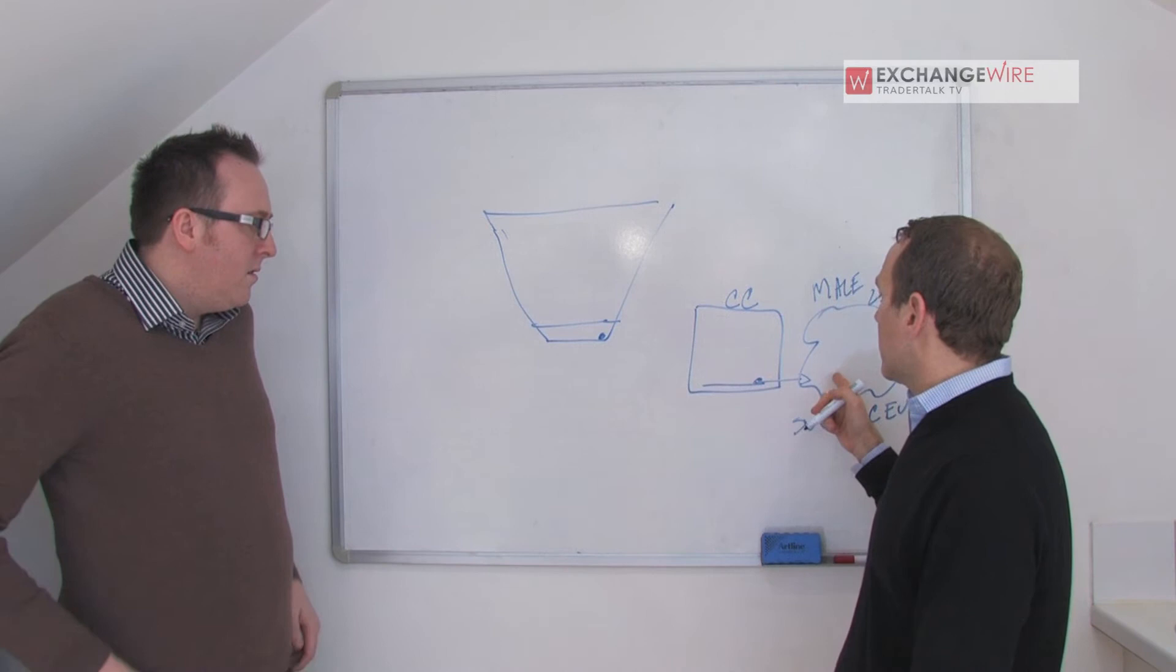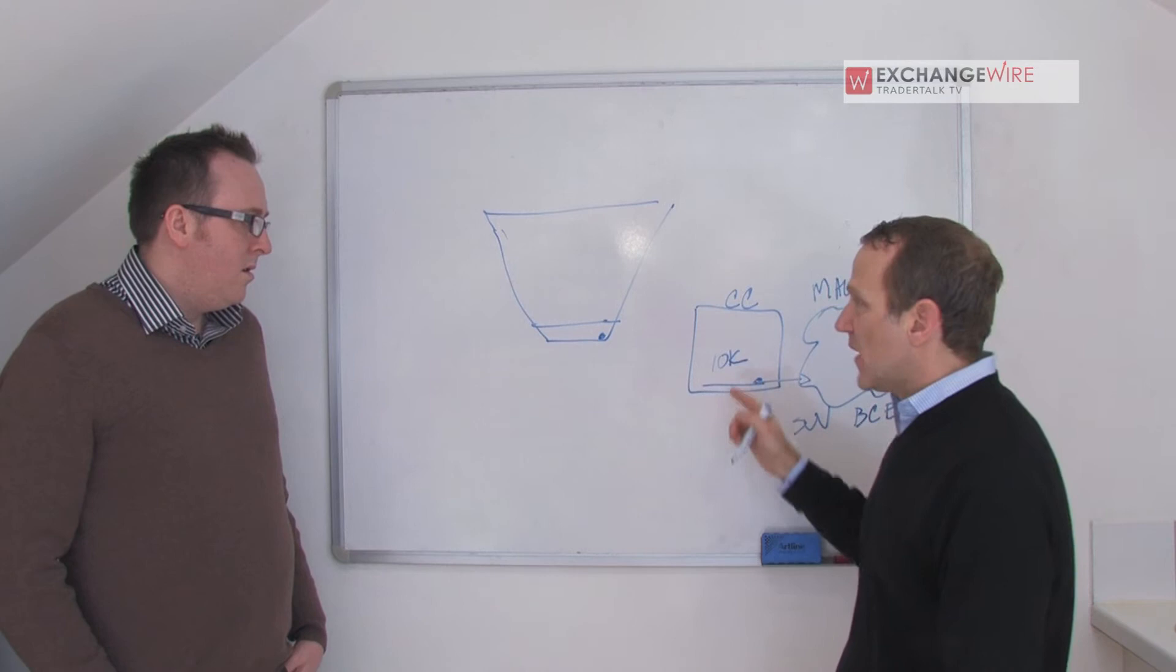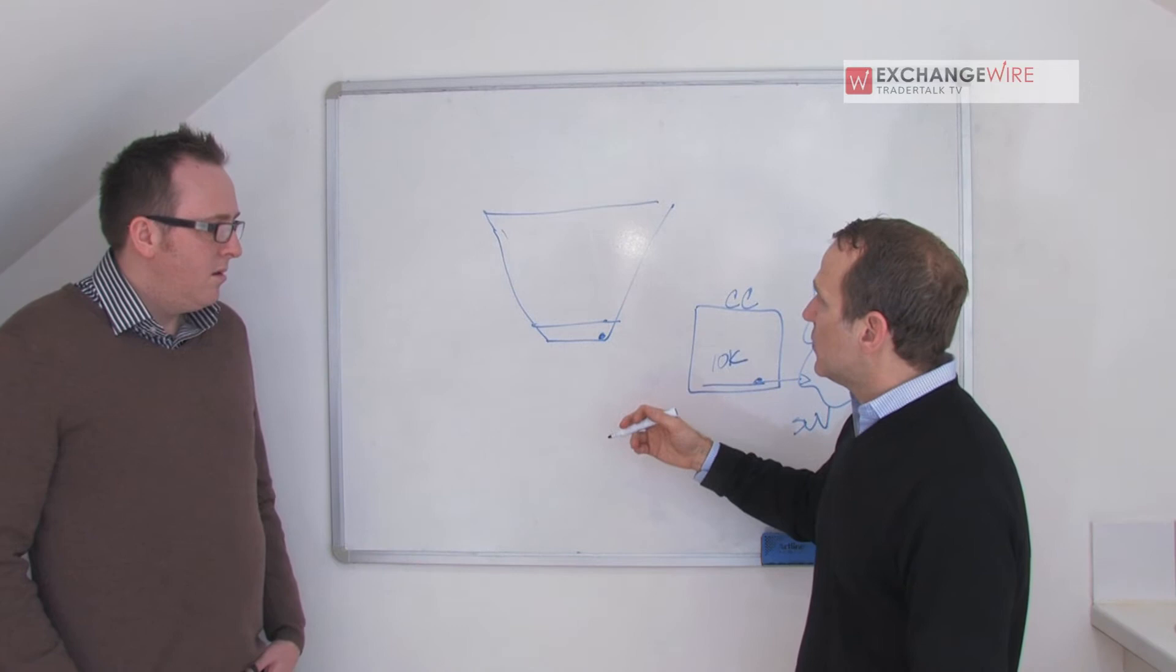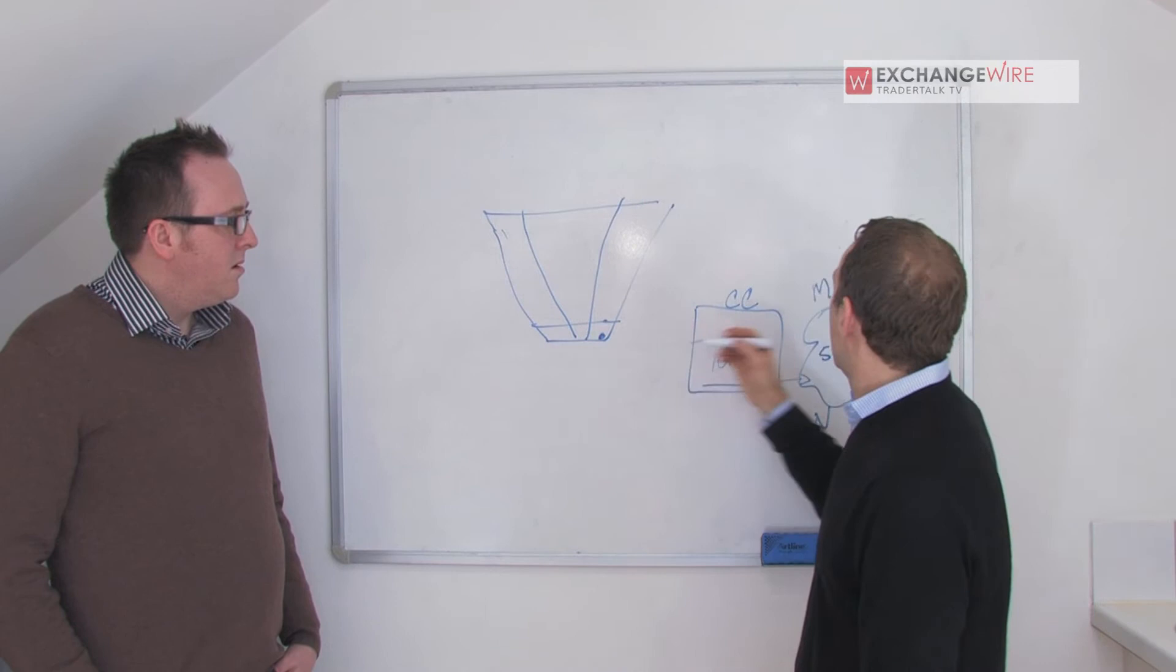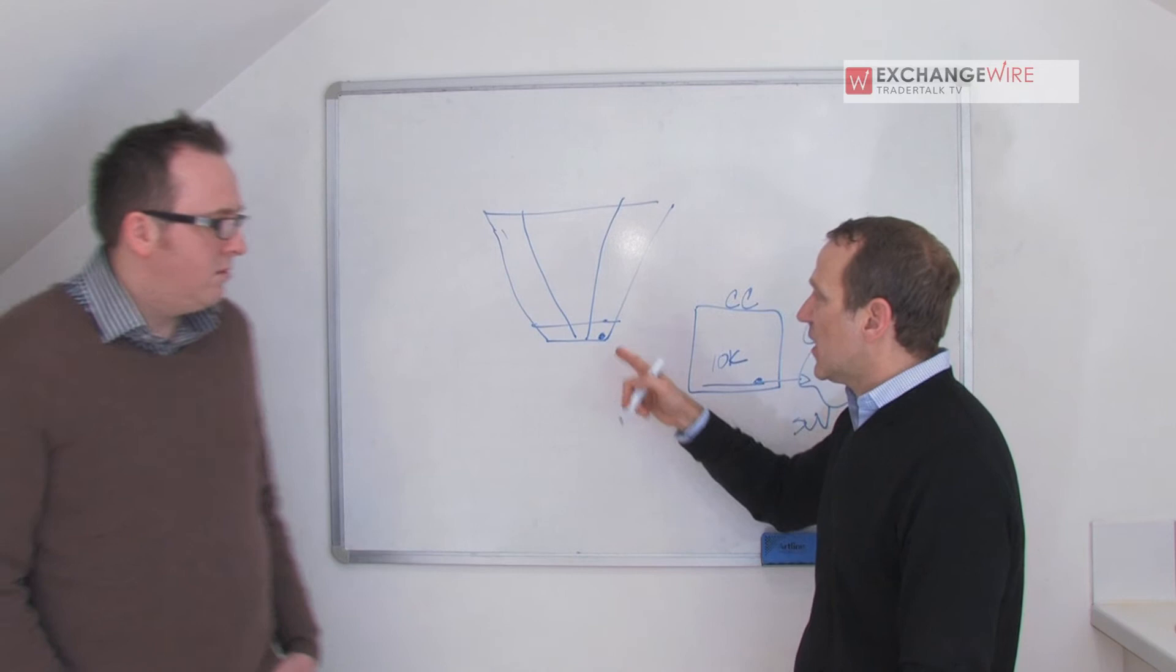Now we build a model or a lookalike model around those same attributes, right? So we'll take maybe 10,000 converters that came and converted on this credit card offer. And we build a modeled audience of let's say 5 million people that have the same attributes as them. And what that allows us to do is now prospect at a much narrower funnel. So instead of looking at, you know, we think a good credit card profile or males who are employed and make a certain amount of money, we can now look at people that look just like the audience that converted in the past.